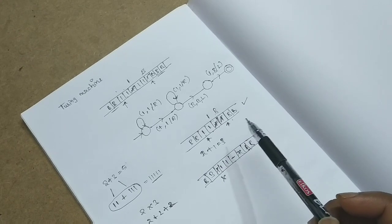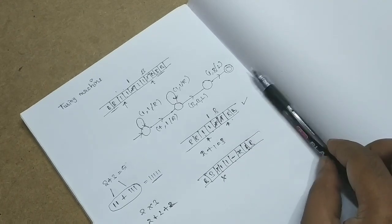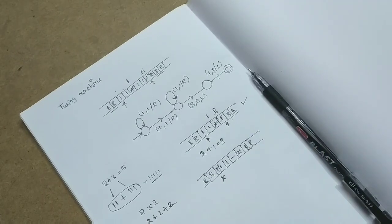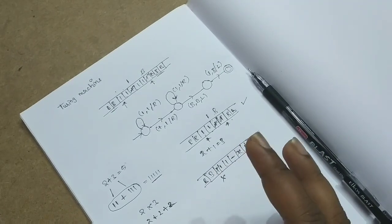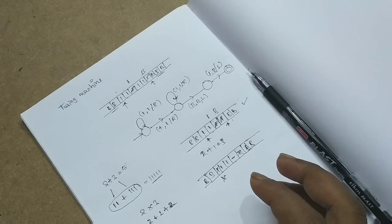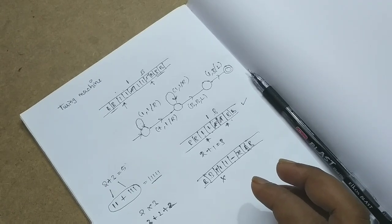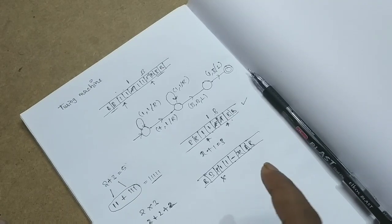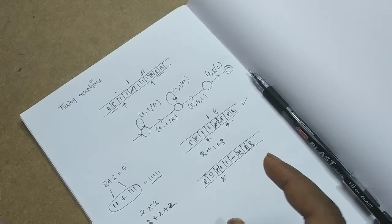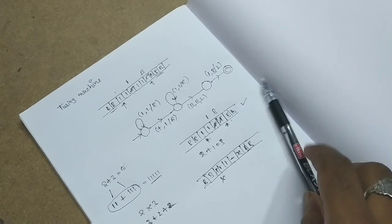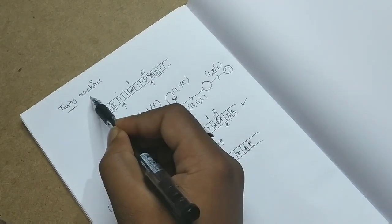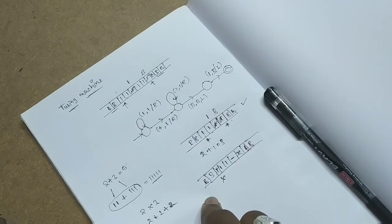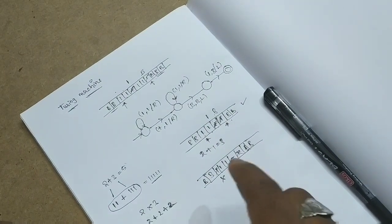For next class, I will tell you the representations of the Turing machine — there are three representations, just as finite automata also have three representations. I hope the topic is clear. I am always stressing that the Turing machine is a mathematical model of a computer — whatever the computer can do, the Turing machine can also do.